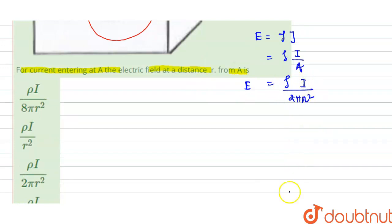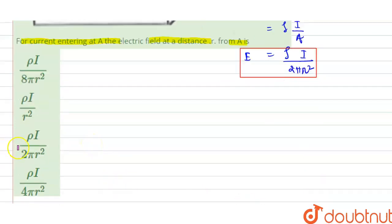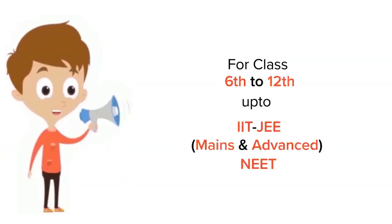So from here what we got: our electric field is density rho into current divided by 2πr². This is our required electric field. So if we look at the options, the third option is your right answer. Rho I divided by 2πr² is the electric field.